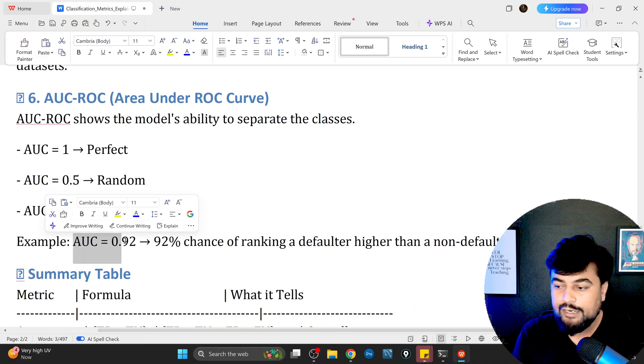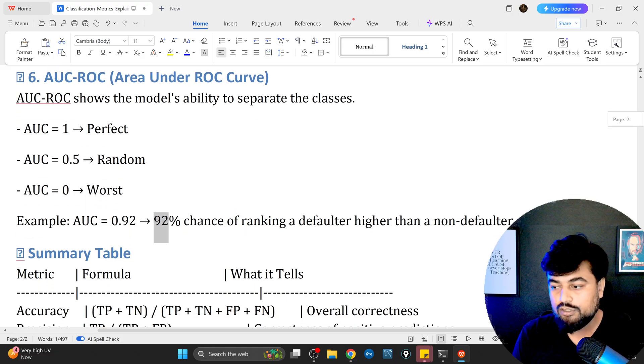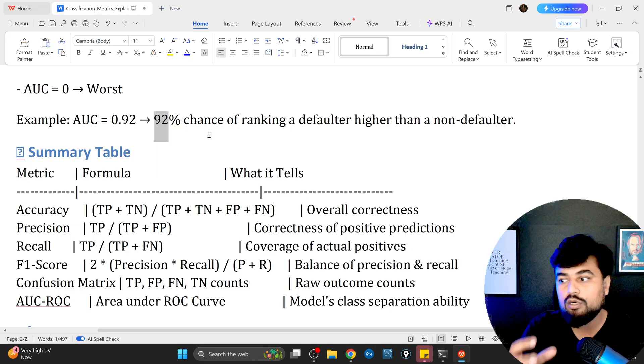Let's say AUC is 0.9, that is 92% chances of ranking a defaulter higher than a non-defaulter. There are 92% more chances that the model will rank defaulters higher than non-defaulters. It can be a bit overwhelming for those who are very new.